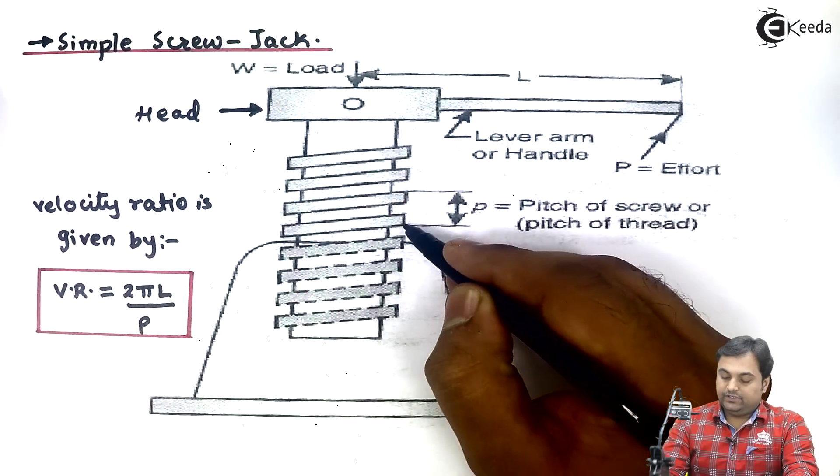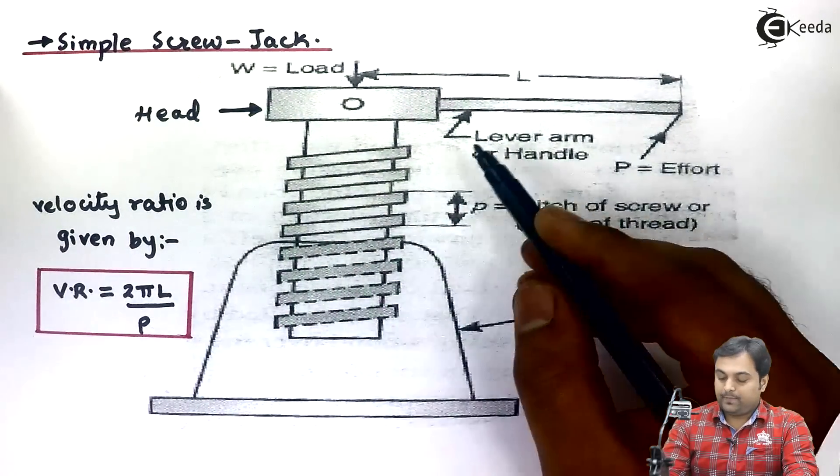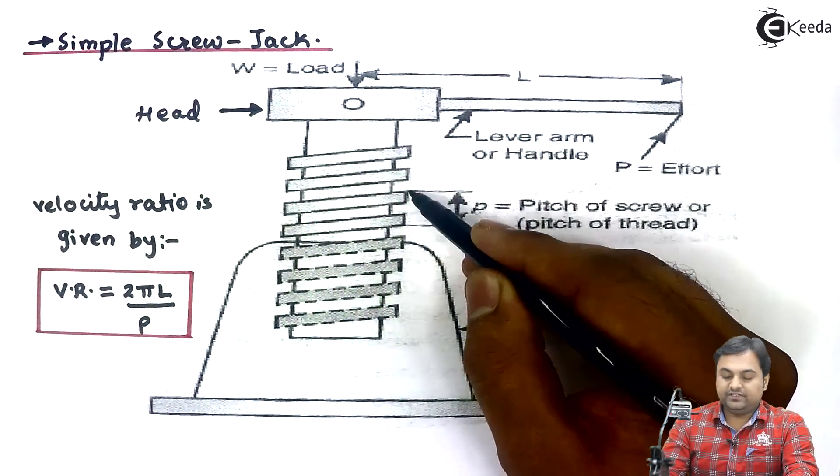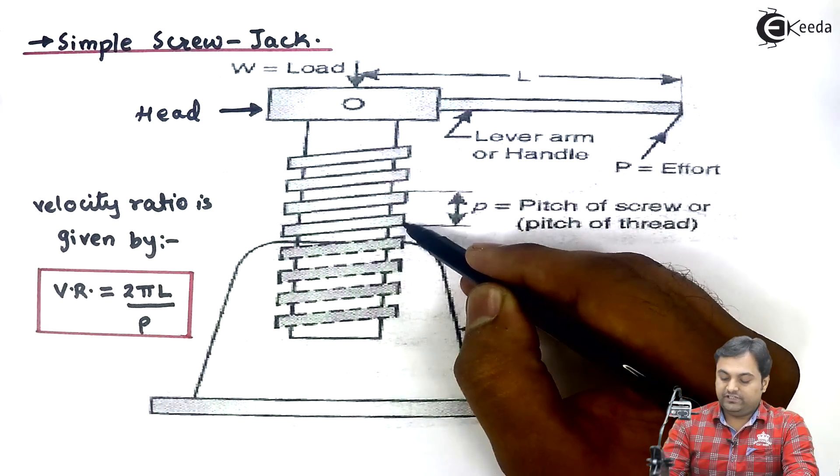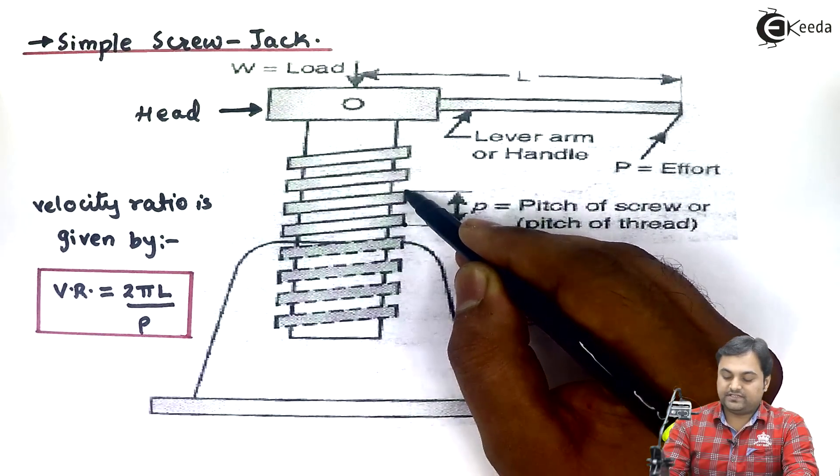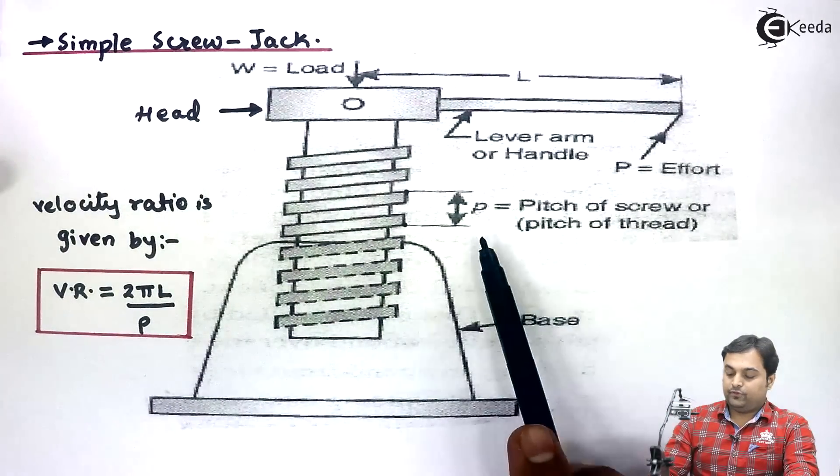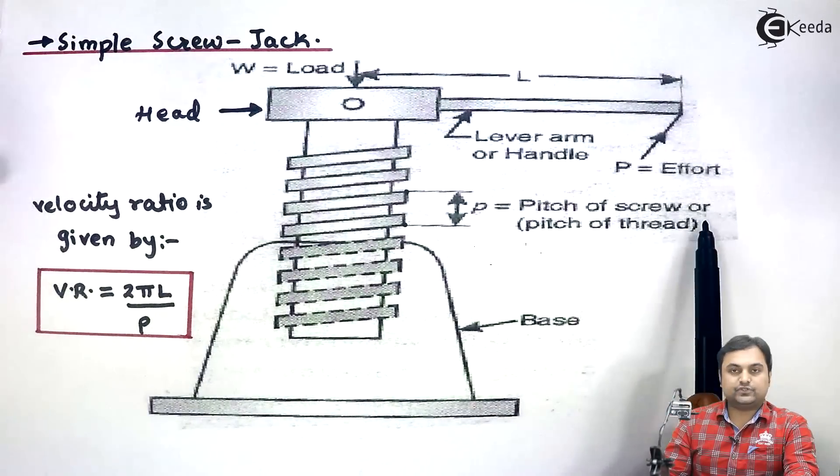Small p indicates the pitch of screw. Pitch means it is the linear distance we travel - if we take one point on the thread and then the same point on the next thread, the distance between them is called pitch. So here I have small p as the pitch of screw thread.